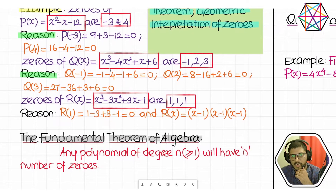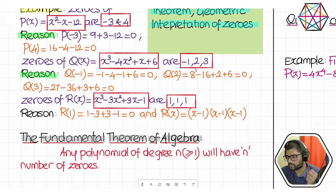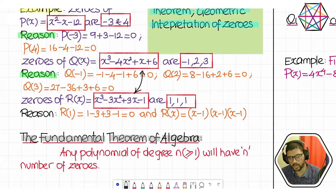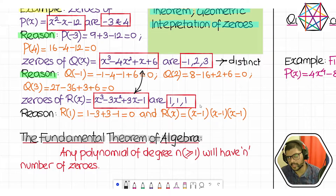For example, what is the degree here? Three. What are the number of zeros? Three. But all those three numbers are different: minus one, two, and three. Distinct. Now this other polynomial is also cubic. According to FTA there are three zeros, and what are they? One, one, and one. So here the zeros are distinct, and in the other case the zeros are identical.